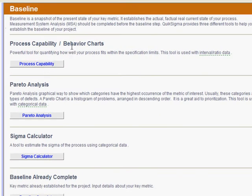Possibly the most powerful is behavior charts and process capability. Not to be overlooked is Pareto analysis, which is a simple and powerful tool. And finally, if you want to express the quality of your process in sigmas, you can do that with a sigma calculator.